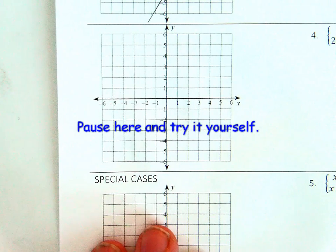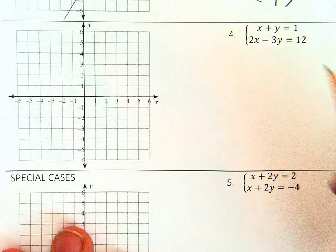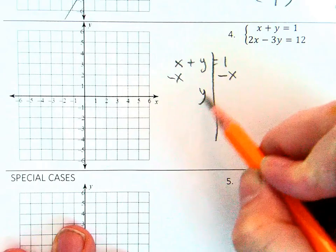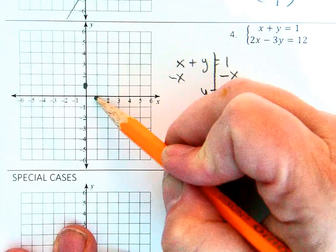Pause the video here and try this example yourself before continuing. Subtract the x-term from both sides of the equation. When y is by itself, you can graph the line.